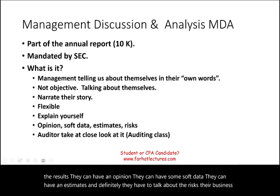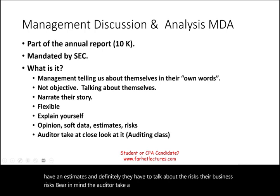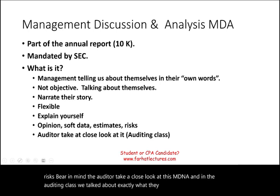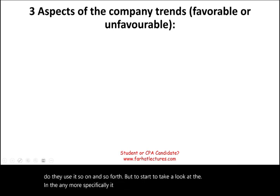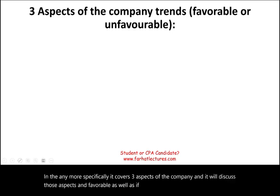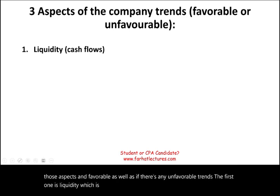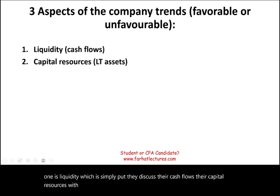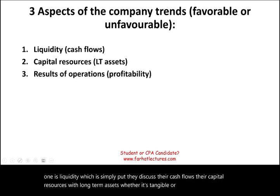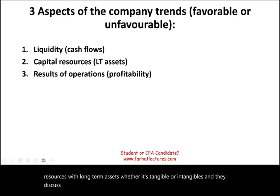Bear in mind, the auditor takes a close look at this MD&A. In the auditing class, we talk about exactly what they look for and how they use it. The MD&A covers three aspects of the company, discussing both favorable and unfavorable trends. The first is liquidity — they discuss their cash flows, capital resources, and long-term assets, whether tangible or intangible. And they discuss results of operations — the profitability of the company.